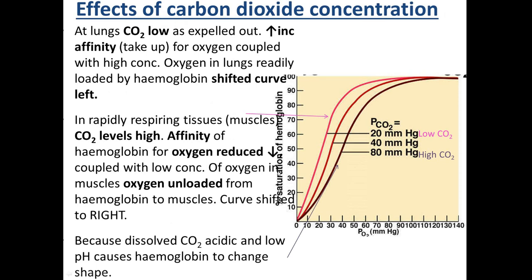At the lungs, where there is a high partial pressure of oxygen and a low carbon dioxide concentration, the hemoglobin has a higher affinity for oxygen. So it takes up oxygen more easily at the lungs because of the low carbon dioxide concentration, and then keeps hold of it as it travels through the blood.